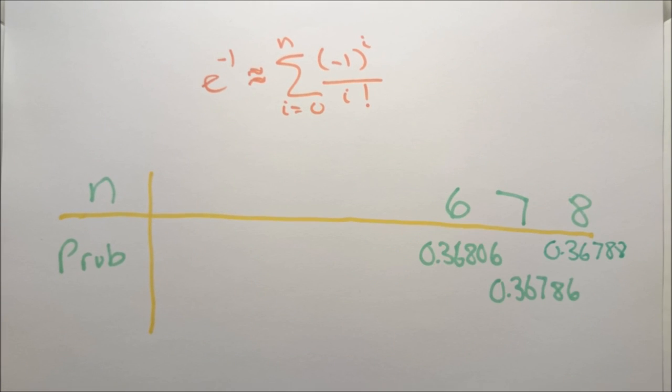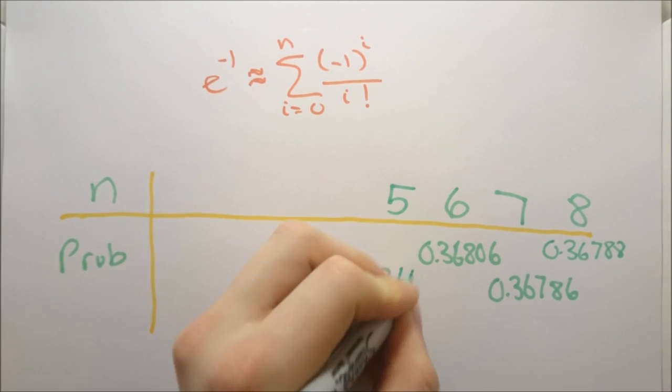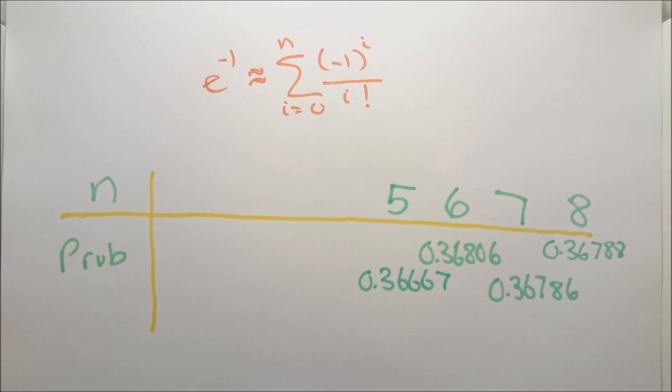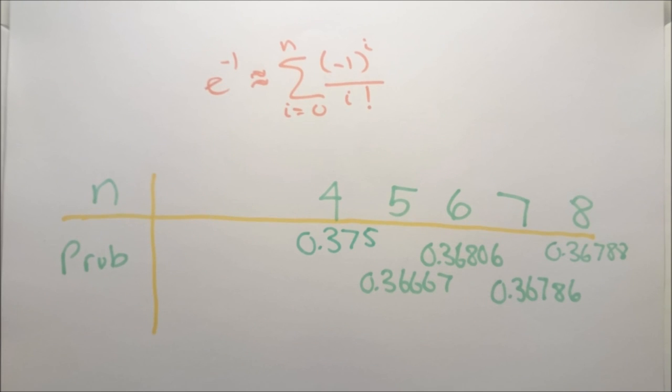Working backwards now we can see that if we plug in n equals 5 we get 0.36667, n equals 4 we get 0.375, n equals 3 we get 0.3334, and n equals 2 we get 0.5. We can see that the probability converges really quickly to 1 over e.